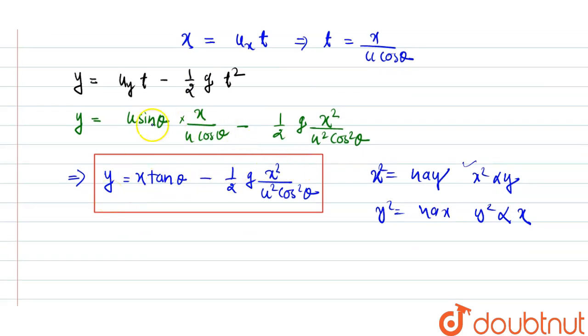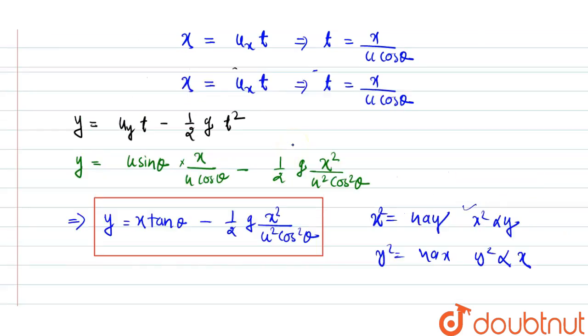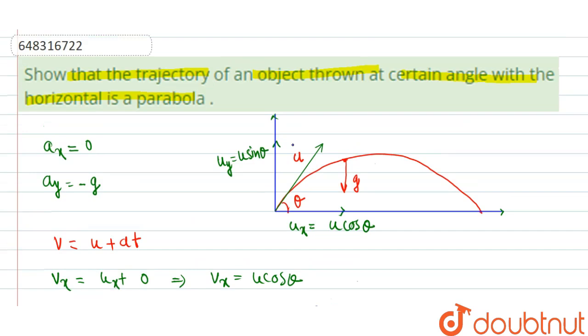From here we can say that this first equation is just resembled to this equation after modifying. So we can say that the path followed by the particle or the object after throwing it at an angle of theta with the horizontal is parabola path.